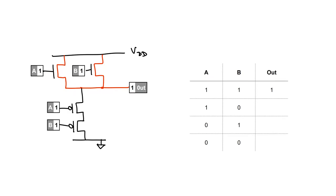Let's now turn B to 0. One of the NMOSFETs at the top switches off, but we've still got a conducting pathway to VDD through the other one, so we still get a 1 at the output. One of the PMOSFETs at the bottom has started conducting that ground voltage upwards, but only as far as the A PMOS MOSFET, which isn't conducting — which stops it propagating all the way to the output. So we still get a 1 at the output.